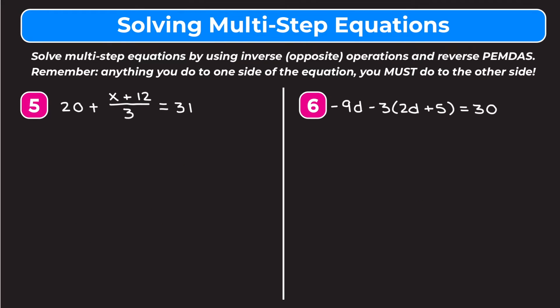Example 5 is 20 plus the quantity of x plus 12 over 3 equals 31. I'll put parentheses in the numerator. Reverse PEMDAS tells us to get rid of the 20 being added first, so we subtract 20 from both sides. On the left we're left with the quantity of x plus 12 over 3. On the right 31 minus 20 gives us 11. Now reverse PEMDAS tells us to get rid of the 3 being divided, so we multiply both sides by 3. The 3s cancel, leaving x plus 12.